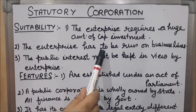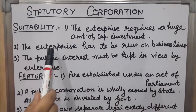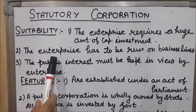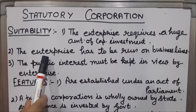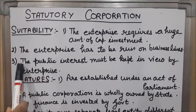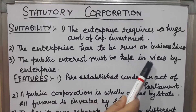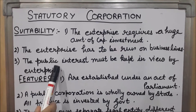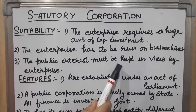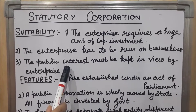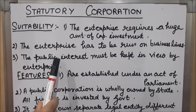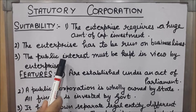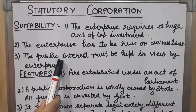The second situation is when the enterprise has to be run on business lines — that is, when an enterprise is established for doing business activity. The third situation is when public interest must be kept in view by the enterprise: when the main objective is a social motive, when public interest is kept in mind, and the main motive is not to earn profit but to serve the society. In these three situations, establishing a statutory or public corporation is better.